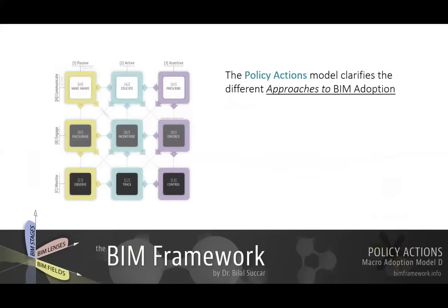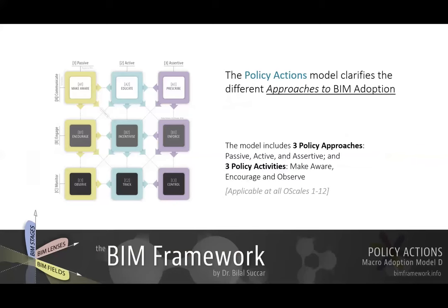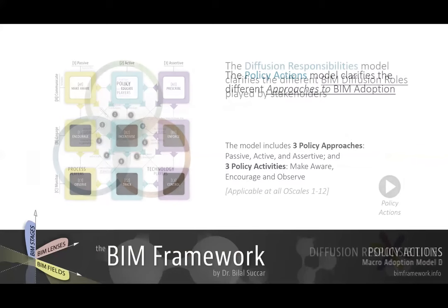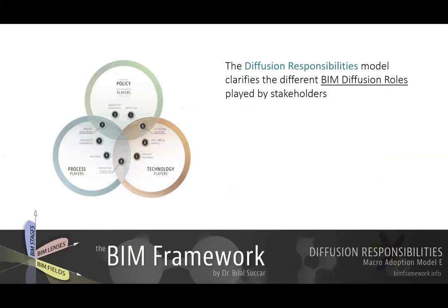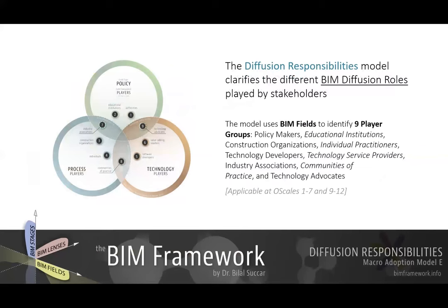The fourth model is the policy actions model, which clarifies the approaches and activities that can be taken by policy makers in order to facilitate BIM adoption. The last macro adoption model is model E, the diffusion responsibilities model, which clarifies the diffusion roles played by different stakeholders. You can jump directly to that model using the link.